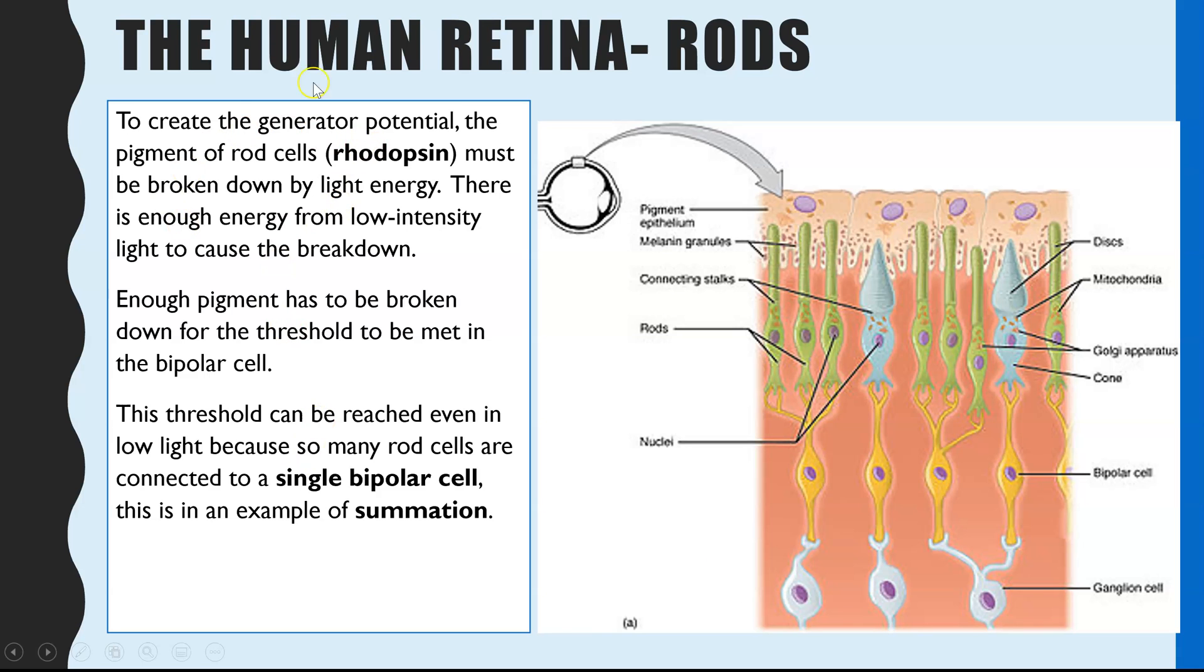Now, it doesn't take a lot of light energy to break down rhodopsin, which is one reason why the rod cells do function even at very low light intensities. But there's also a second reason why, even if it's very dark, we're still able to see in black and white. And that is because of that concept, retinal convergence.